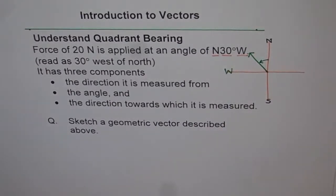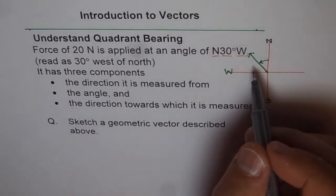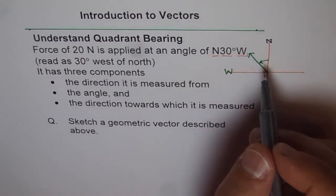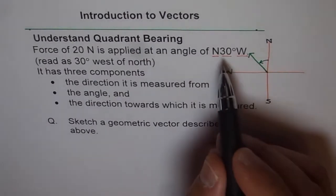So that is how we represent direction with the help of quadrant bearing. Now, when you draw your geometric vector here, in that case, the length of the vector is the representation of the magnitude.